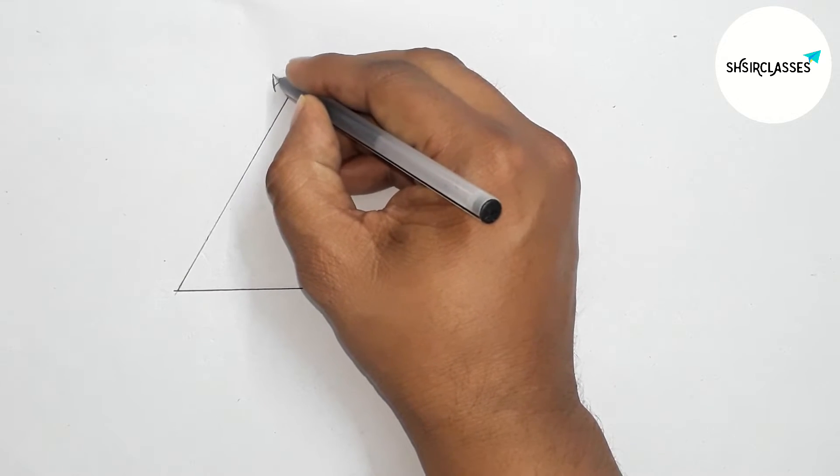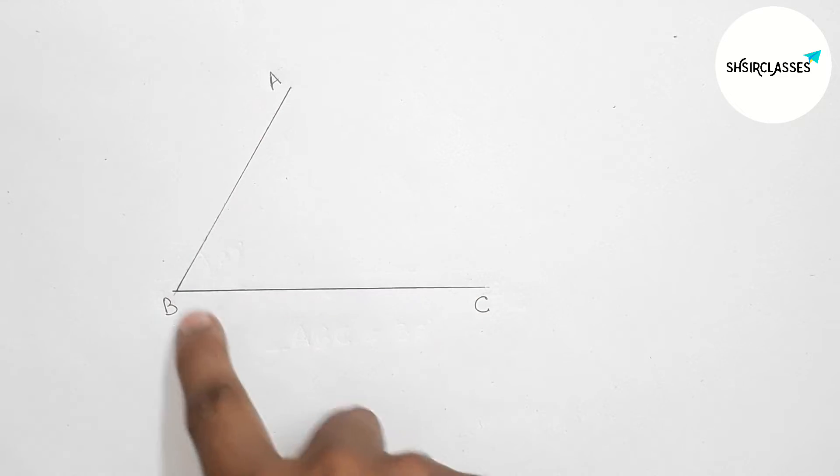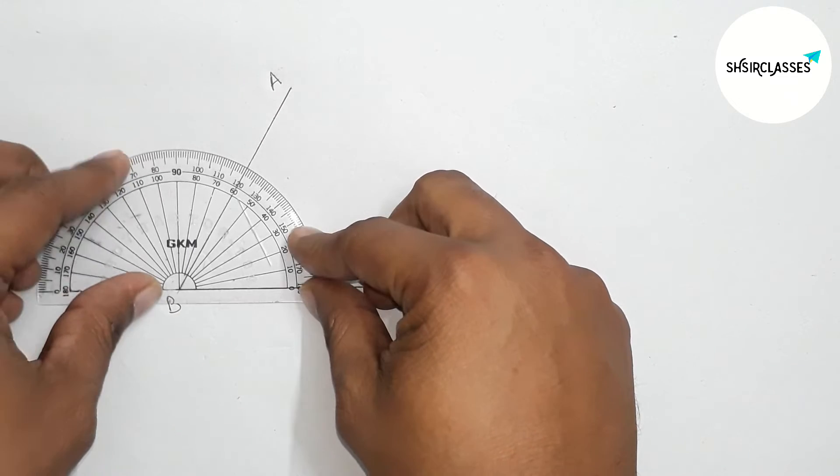And now labeling all the points or taking point here A and B here C. Okay, so now I am going to measure with the help of protractor.